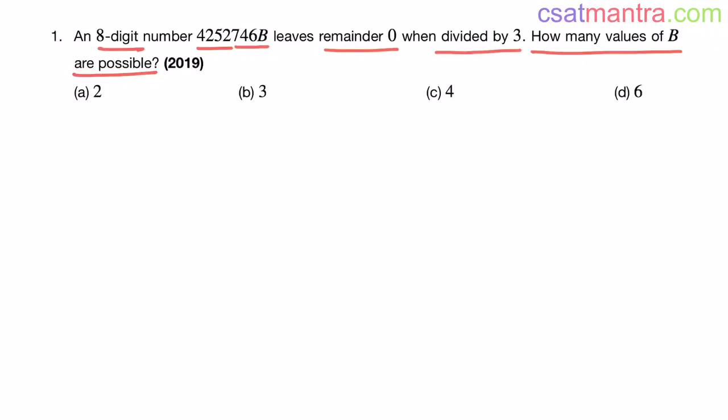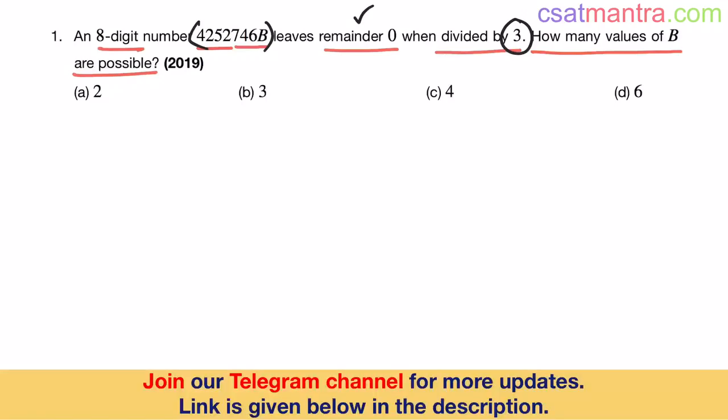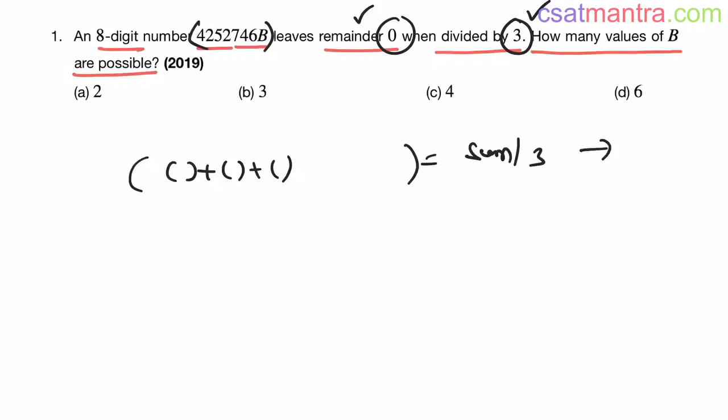Now what is the divisibility rule of 3? If a number is divisible by 3, that means it is leaving the remainder 0 when divided by 3. So if a number is divisible by 3, then sum of its digits should be divisible by 3. When you divide that digit sum with 3, it should leave the remainder 0.